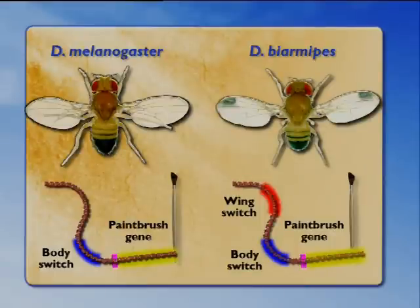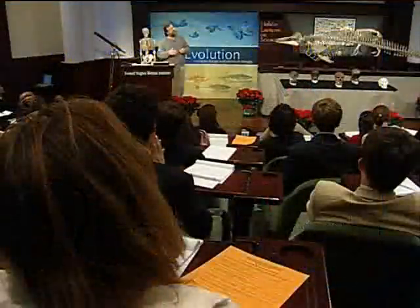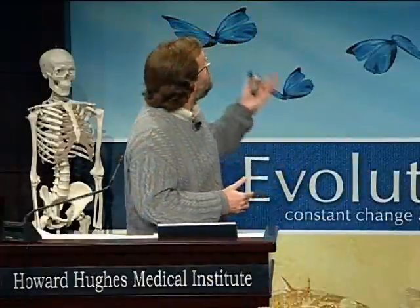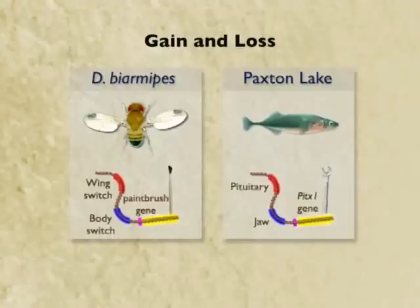So what we understand here is that the process of evolution involves both gain and loss. In the case of the spotted fruit flies, a new switch has evolved that draws a new pattern — it's expanded the role, expanded the number of jobs, of a toolkit gene.